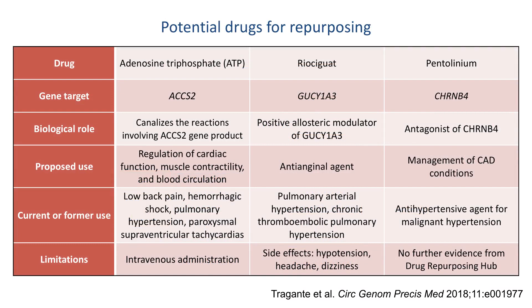The authors used the first pipeline and identified three drug compounds with potential for drug repurposing: adenosine triphosphate, or ATP, Ryociguat, and Pentolinium. ATP, currently available in Europe for the treatment of low back pain, targets the ACCS2 gene and has important roles in regulating cardiac function, muscle contractility, and blood circulation, which might be beneficial for the treatment of CAD and MI.